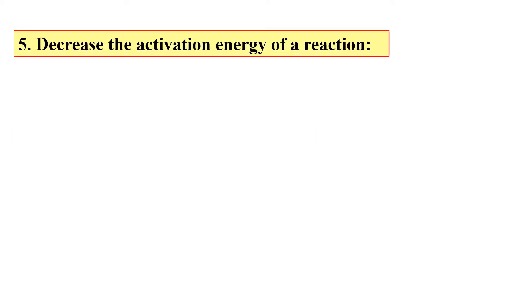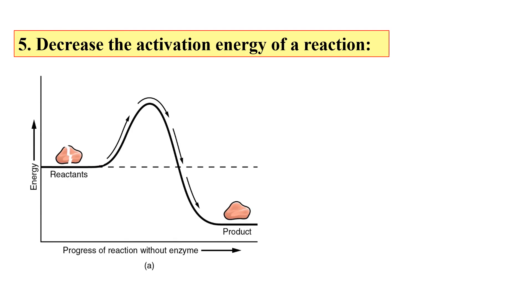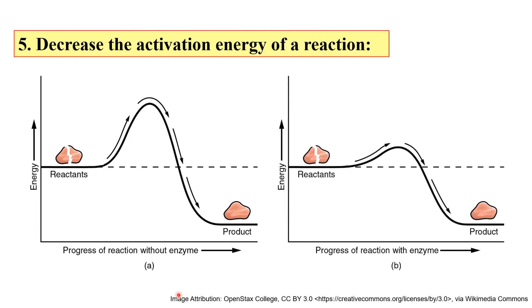The next property is the decrease in activation energy of reaction. Enzymes increase the rate of reaction by decreasing the activation energy. Activation energy is the energy required by the substrate to cross the energy barrier in order to convert into product. In this diagram, you can see the reactant or substrate and the energy required to convert it into product — that is without enzyme. With enzyme, you can notice that the activation energy limit has been lowered, so the substrate can easily pass through the energy barrier and convert into product. In this way, enzymes decrease the activation energy and ultimately increase the rate of reaction.